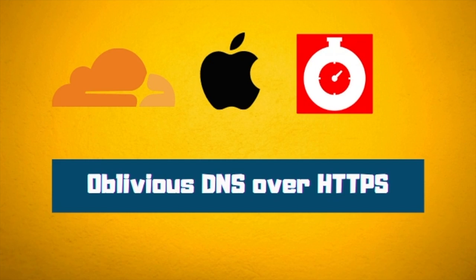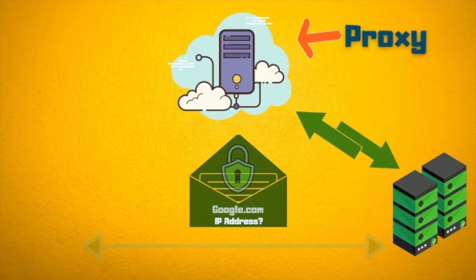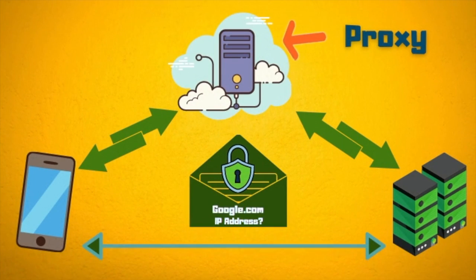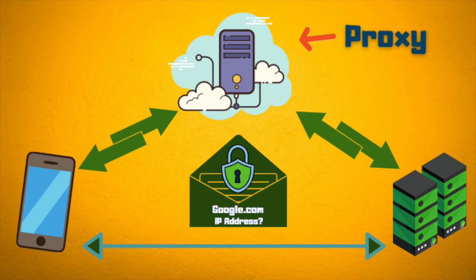And that is why Apple, Fastly, and Cloudflare came up with a new technology called Oblivious DNS over HTTPS, or ODOOH. ODOOH adds a proxy layer in the middle so the resolver doesn't know the original client IP address, and the entire communication is encrypted end-to-end so even the proxy doesn't see the content of the DNS query.